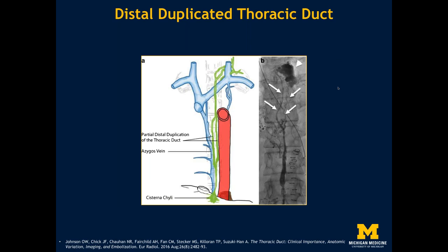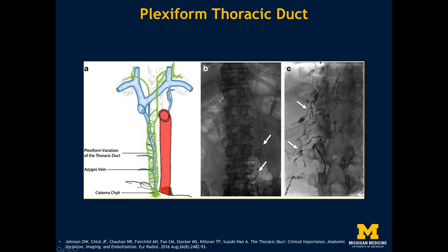In contrast to distal duplication, some cases are particularly challenging because there is no true thoracic duct — we call these plexiform variants. Instead of a discrete duct extending from the abdomen to the chest, there's a whole bunch of disconnected networks. This makes embolization very challenging because the thoracic duct itself can't really be accessed. There are techniques that Ravi helped develop that can treat these, which we'll discuss later. Originally this was a type of variant that was difficult or impossible to treat.